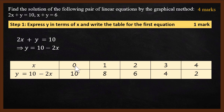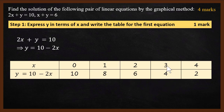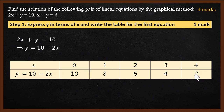For example, when x equals 0, y is 10 minus 2 times 0, which equals 10. When x is 1, y becomes 10 minus 2, which is 8. When x is 2, y is 10 minus 4, which is 6. When x is 3, y is 4. And when x is 4, y is 2. If you write this table for the first equation, you will get 1 mark.